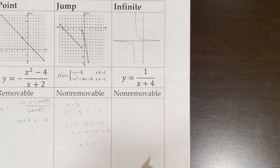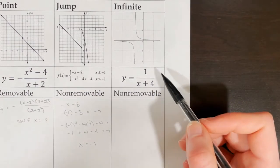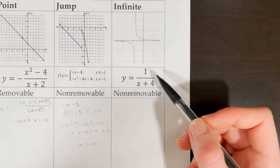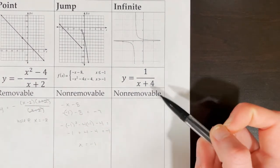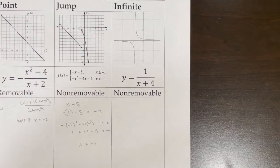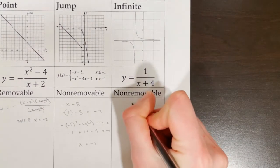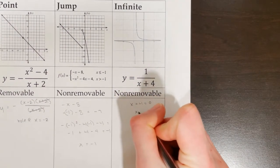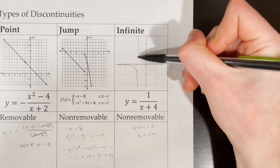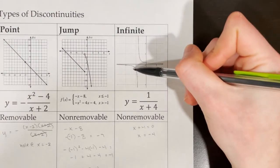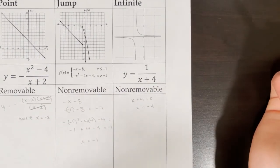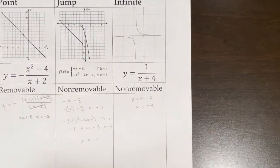For the infinite discontinuity, which is also non-removable, I'm looking at y equals 1 over x plus 4. Normally I'd factor, but this is already fully factored. So all I need to do is find the vertical asymptote: x plus 4 equals 0, meaning x equals negative 4. Looking at the graph, there is a vertical asymptote at x equals negative 4 — from the left side it's approaching negative infinity, from the right side positive infinity. That is a non-removable discontinuity occurring at x equals negative 4.